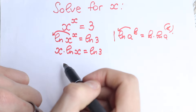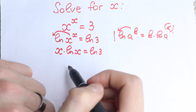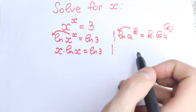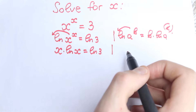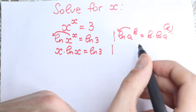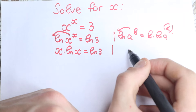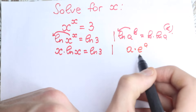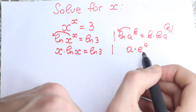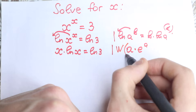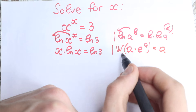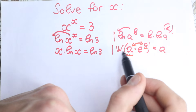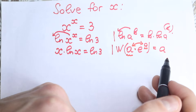For the next step we need to know about a really great function called the Lambert W function. A lot of students find difficulties with this function — they don't know how to apply it or how it works. The key rule is: if you have an expression of the form a times e to the power a, then applying the Lambert W function gives you back just a.